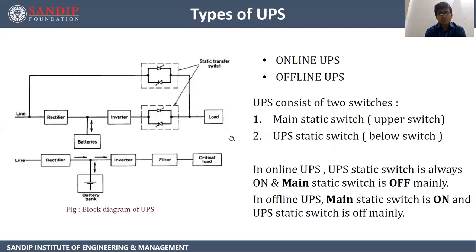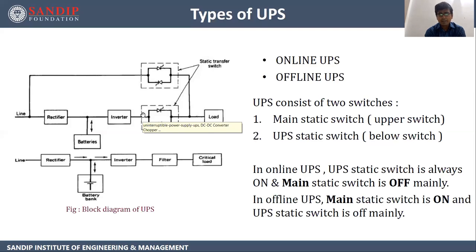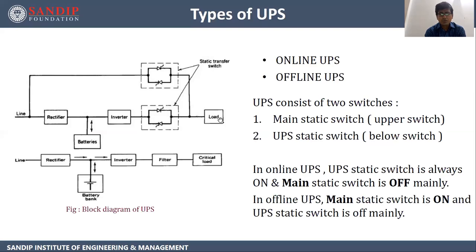Based on that, there are two types of UPS: Online UPS and Offline UPS. In online UPS, the lower switch — that is the UPS static switch — is mainly on, and the main static switch is mainly off. So the AC supply is fed to the rectifier, which converts it into DC. This DC is stored in the battery as well as passed through the inverter, so the DC gets converted into AC and fed to the load.